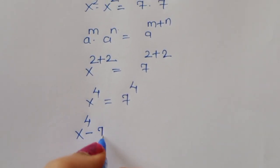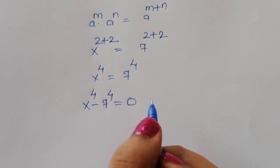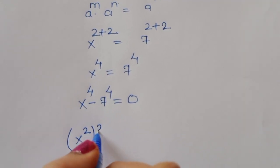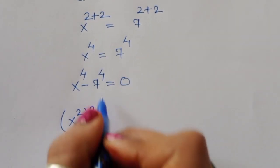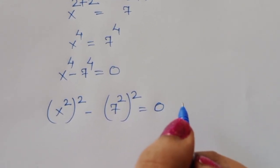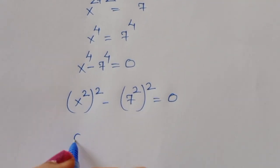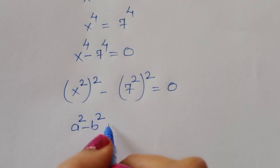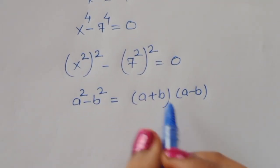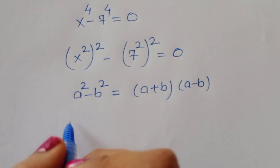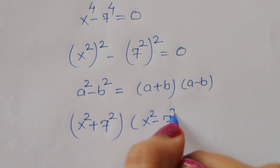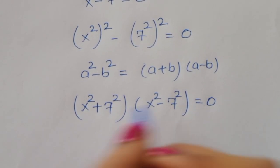We can write this as x⁴ - 7⁴ = 0. Converting to square form: (x²)² - (7²)² = 0. This is the form of a² - b², and the formula is a² - b² = (a + b)(a - b), so we get (x² + 7²)(x² - 7²) = 0.